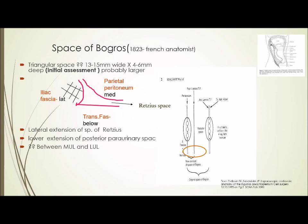In relation to the pre-peritoneal layers, the space of Bogros lies between layer two and layer three of the transversalis fascia - just as any other pre-peritoneal space. The space of Retzius: between layers two and three. Space of Bogros: between layers two and three. All pre-peritoneal spaces lie between the transversalis fascia layers sticking to the anterior wall (layers one and two) and the pre-peritoneal fascia sticking to the peritoneum (layer three). This is fundamental.